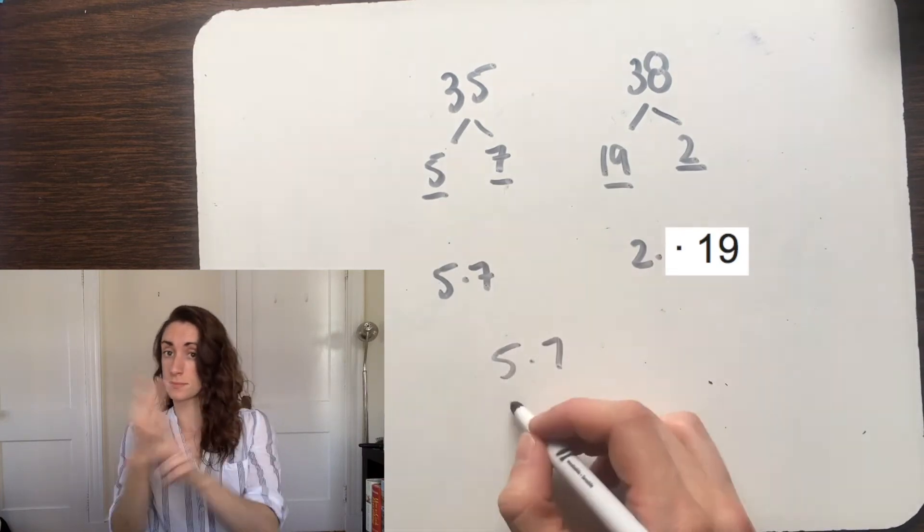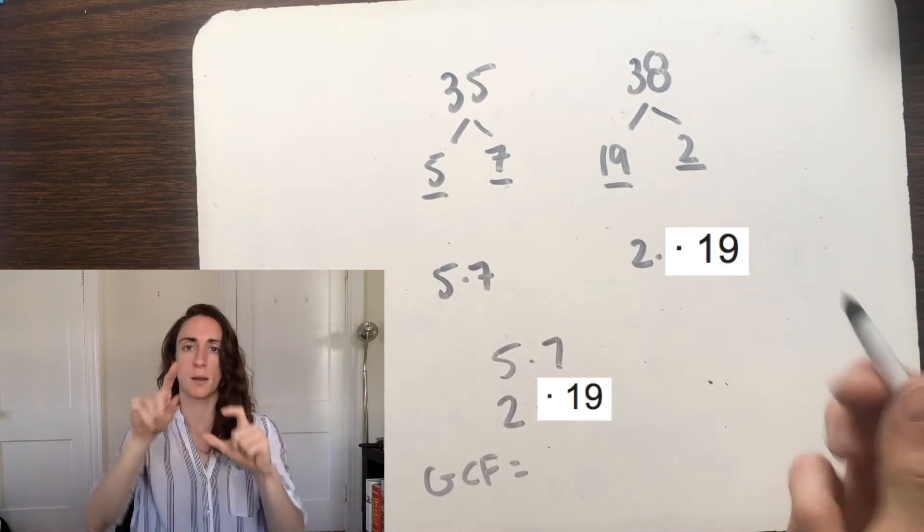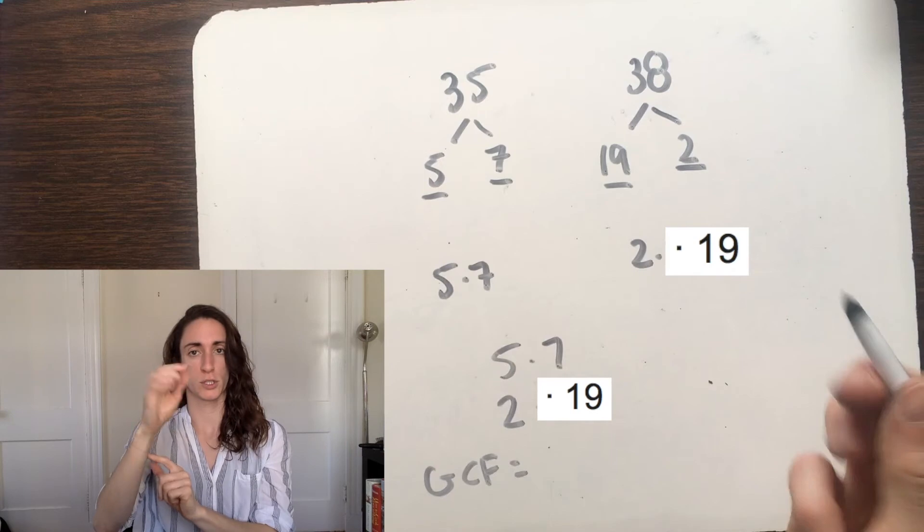Now we can compare the prime factorizations, 5 times 7 and 2 times 19, and we can see that they have nothing in common. These two numbers have no shared prime factors. So what does this mean for the greatest common factor?